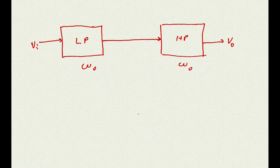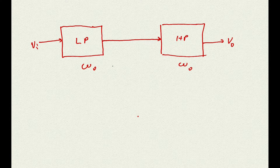Assuming that the output impedance of the lowpass filter is low and the input impedance of the highpass filter is high, the input of the highpass filter will not affect the functionality of the lowpass filter. In such a case, the transfer function of the whole system is equivalent to the product of the transfer functions of the single filters. As a result, we have a single filter with two coincident poles, omega zero.